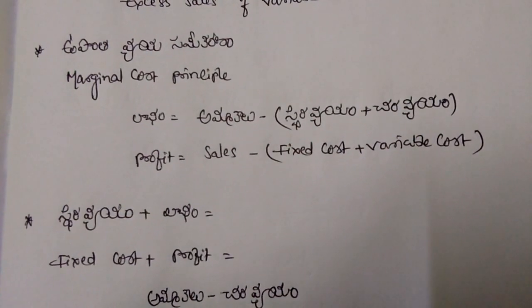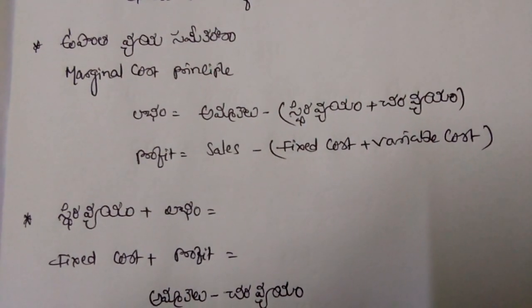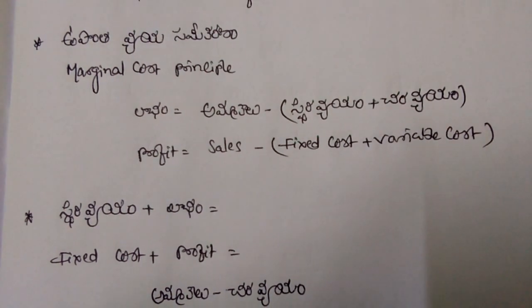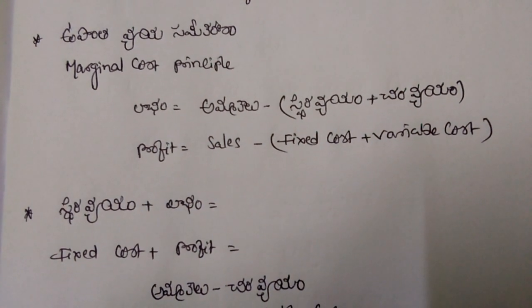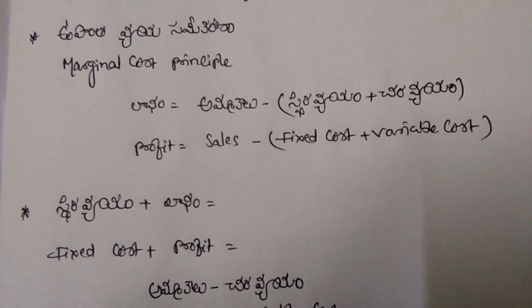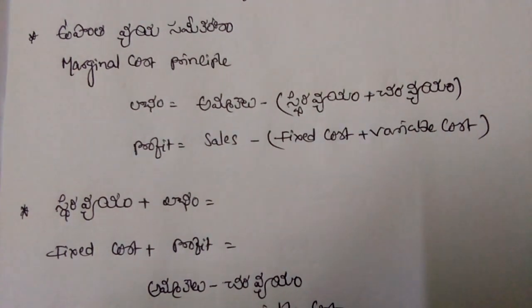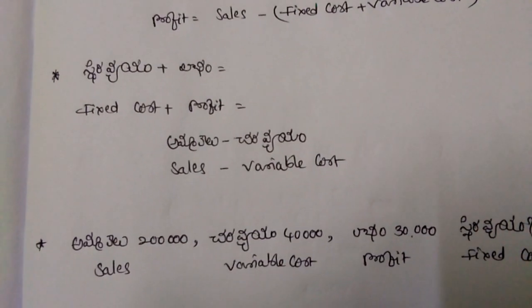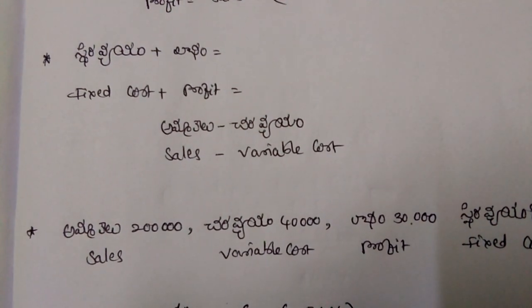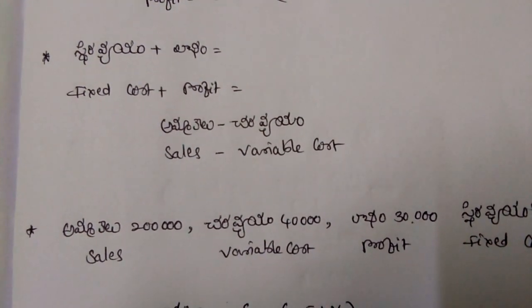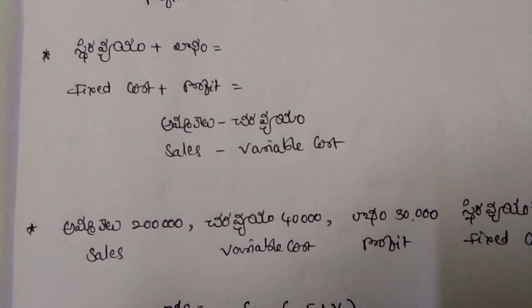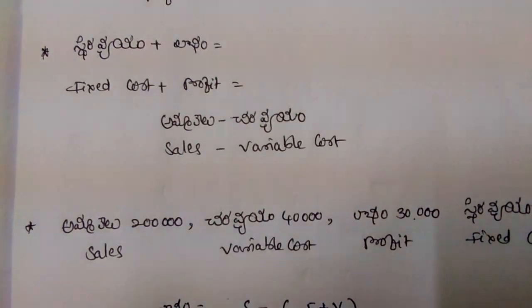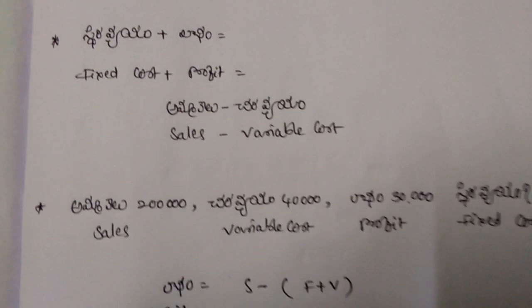Upanthav Viyayya Samikaranam — Marginal Cost Principle. Profit equals to Sales minus Fixed Cost plus Variable Costs. Fixed Cost plus Profit equals to Sales minus Variable Costs.